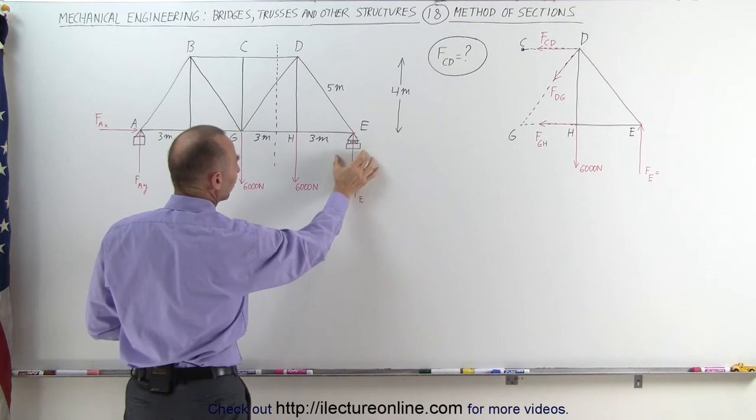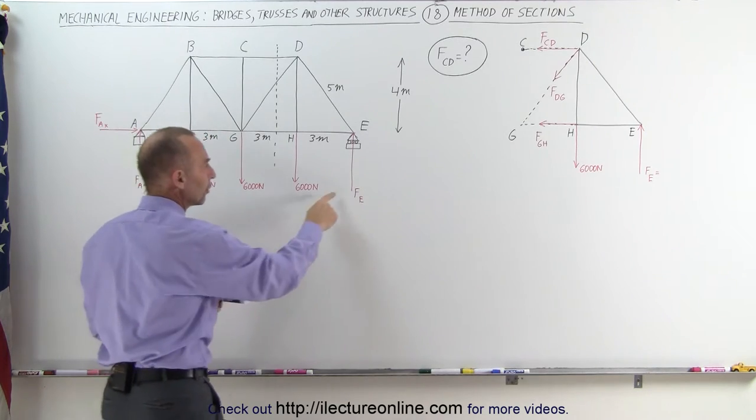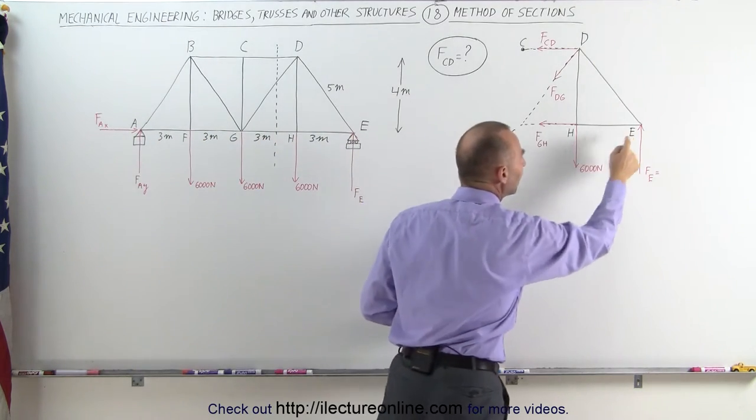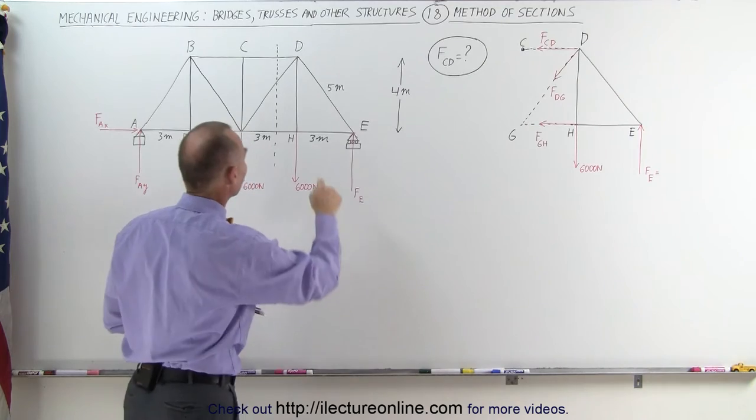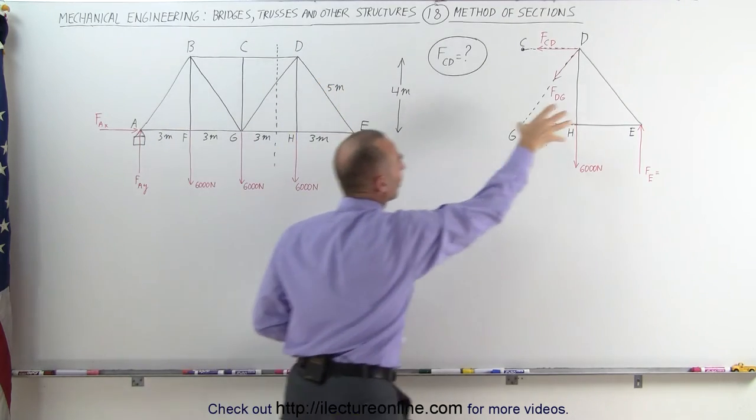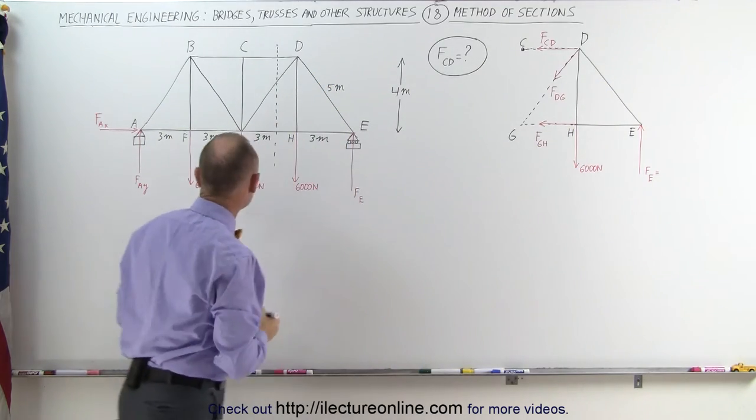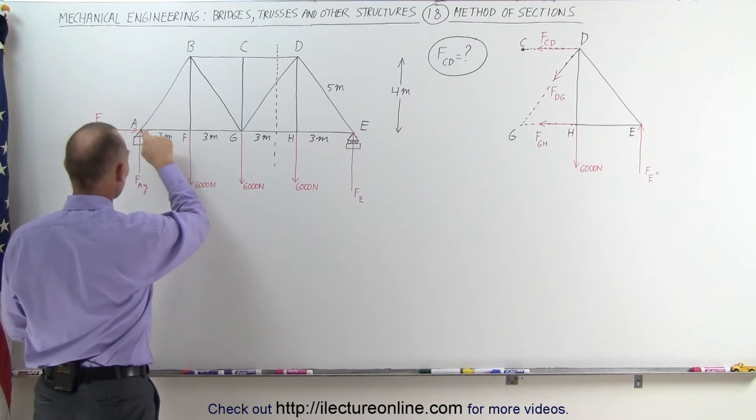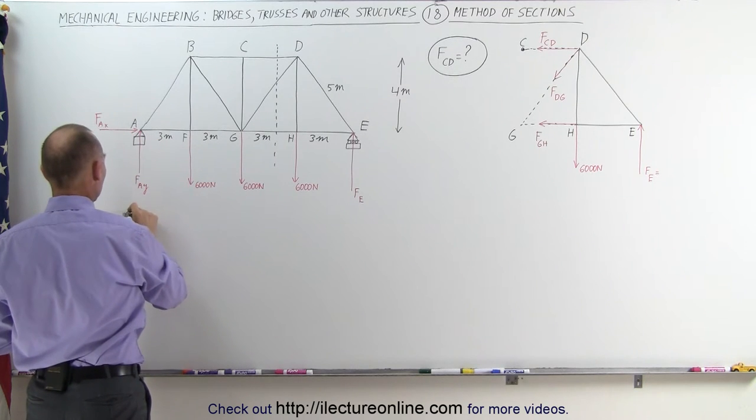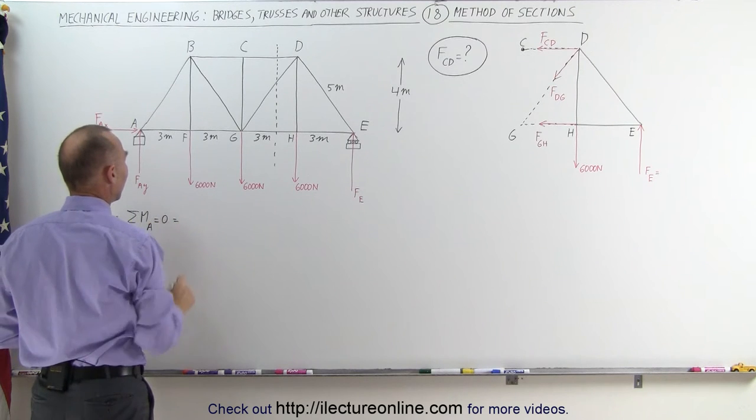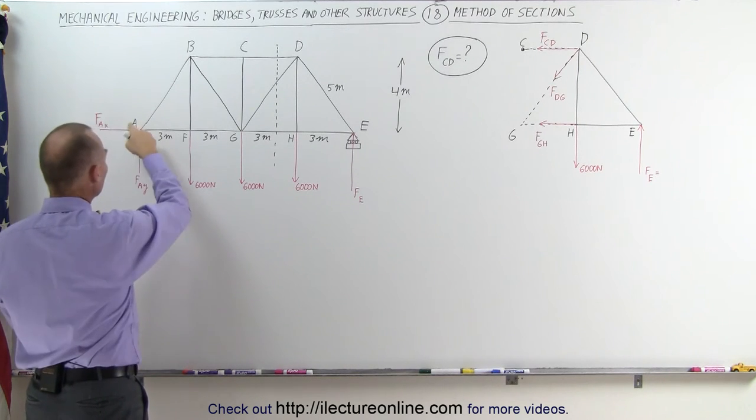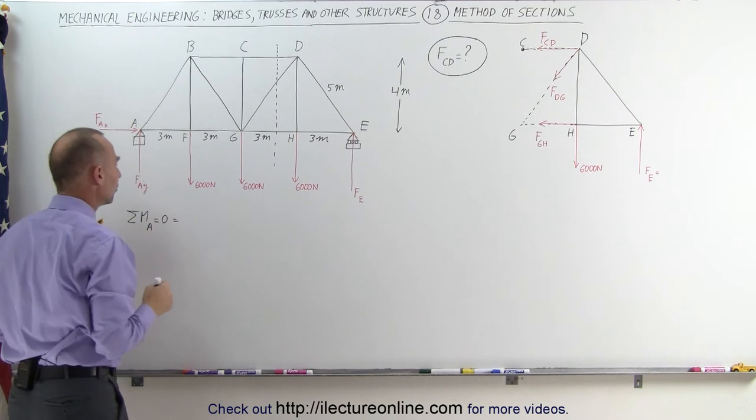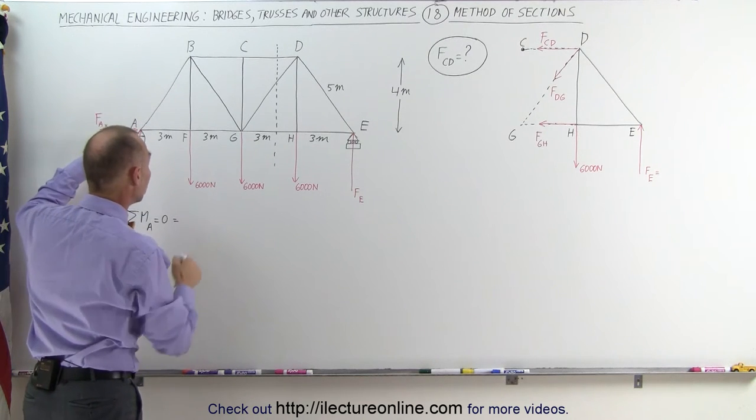First what we want to do is figure out the force right here at E because we're going to need that as a known quantity in our section that we took off. Realize here that this here represents this section right there. We're going to use the moments about point A. The sum of the moments at point A must equal zero and let's add them all up. So these will cancel out because those two forces go right through the moment, the point about which we find the moment.